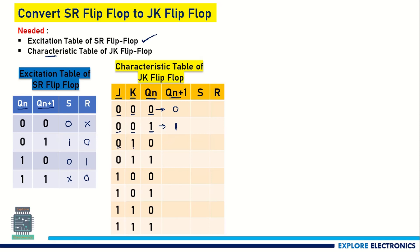Continuing the characteristic table: for J=0, K=1 with current state 0, the next state is 0 (reset). For J=0, K=1 with current state 1, the next state is 0. For J=1, K=0 with current state 0, the next state is 1 (set). For J=1, K=0 with current state 1, the next state remains 1. For J=1, K=1 with current state 0, it toggles to 1. For J=1, K=1 with current state 1, it toggles to 0. This completes the characteristic table of JK flip-flop.